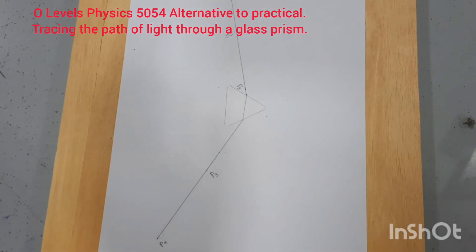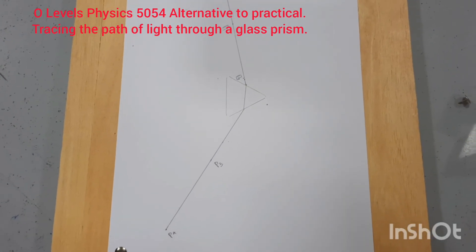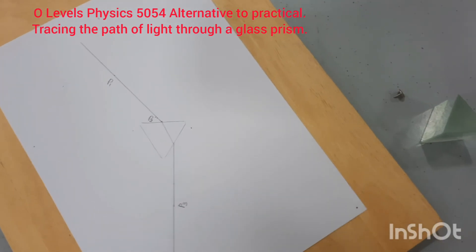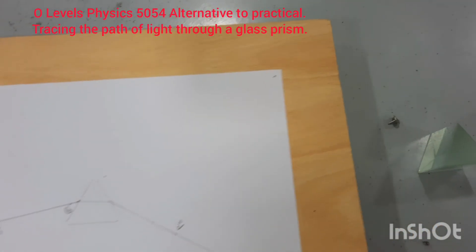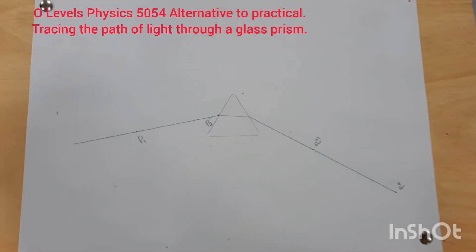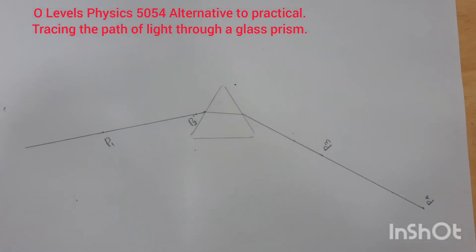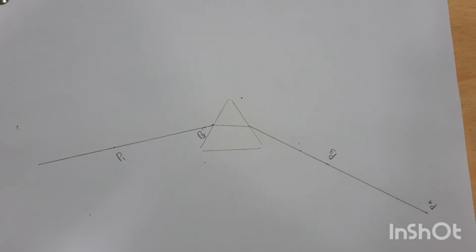So this is the path of the light ray inside the prism. My dear students, this is a simple experiment in which we are able to trace the path of the ray inside the prism. Thank you very much. I hope you have understood this experiment.